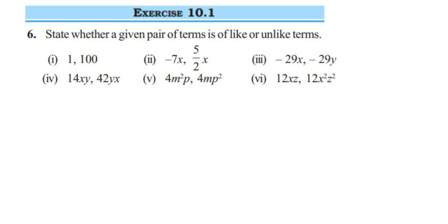Here is a question from Exercise 10.16 from Algebraic Expressions of Class 7. The question is based on like and unlike terms — state whether the given pair of terms is like or unlike. Like terms are the ones which have the same algebraic factors, and unlike terms means the algebraic factors are not the same.